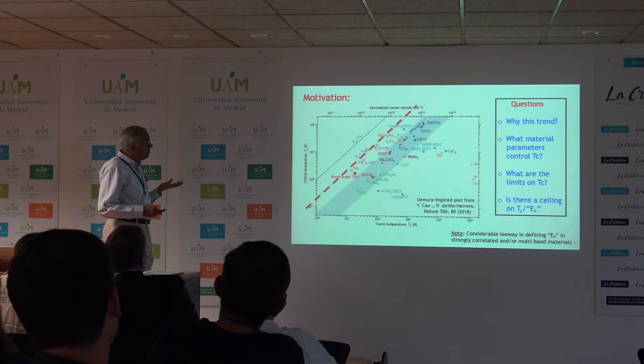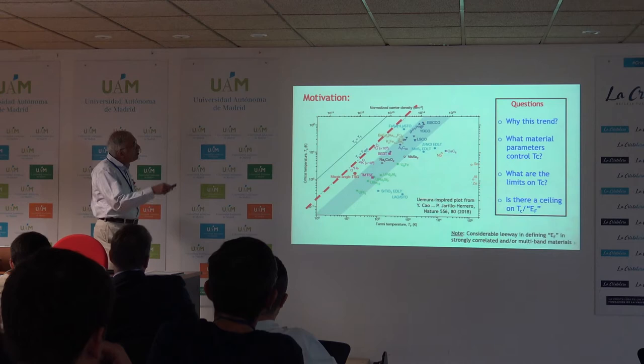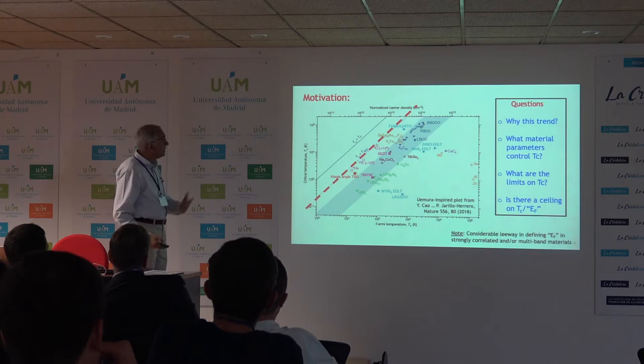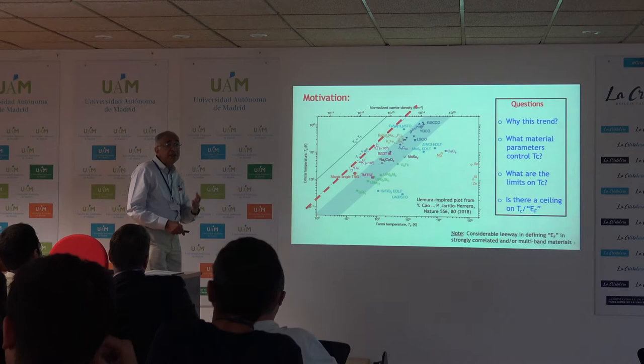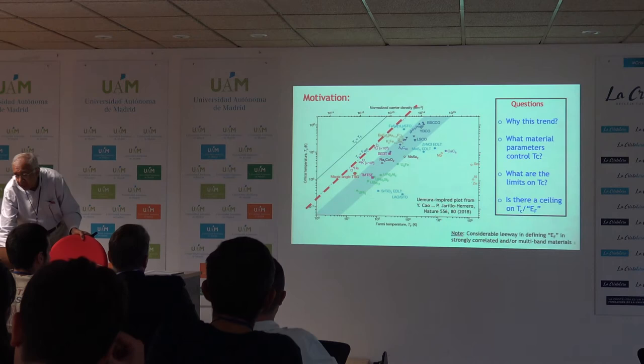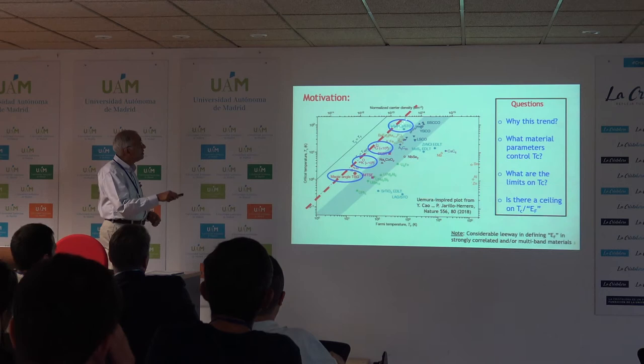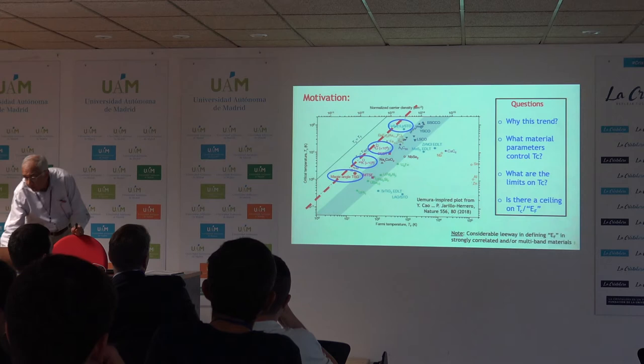This raises the question: why do we have such high TC, and more importantly, what microscopic parameters control TC? Because some of these are very different systems — magic angle, endoperite, binary graphene, ultracold atoms, monolayer selenide, and so on. So what are the limits on TC? It looks from this plot that all known superconductors lie below some line. Could it be that some experimentalist devises something which lies above this line, or is that forbidden by some general principle of nature? These are the questions I would like to address. These four types of systems which lie closest to the line are ones I'm going to focus on.